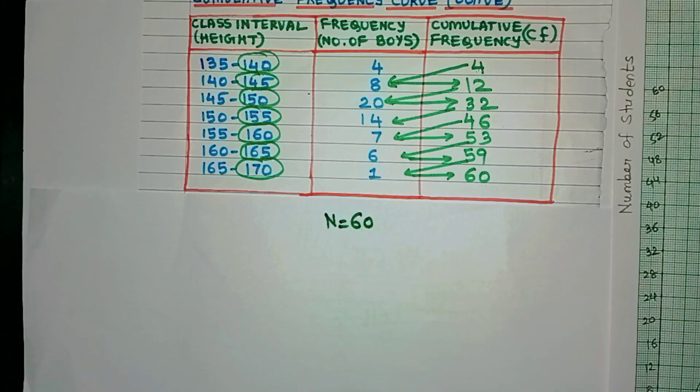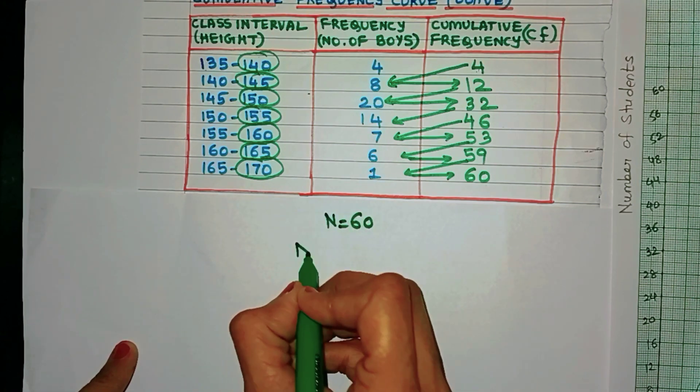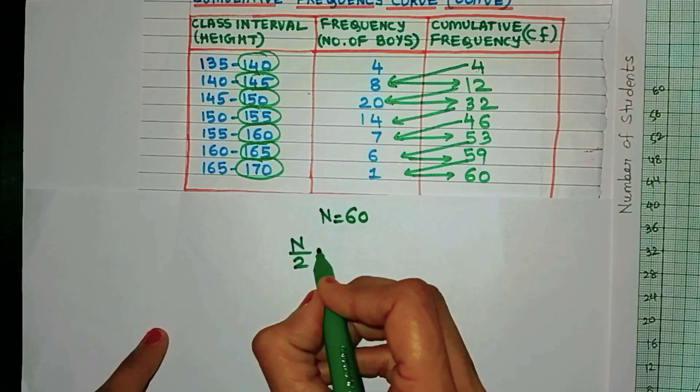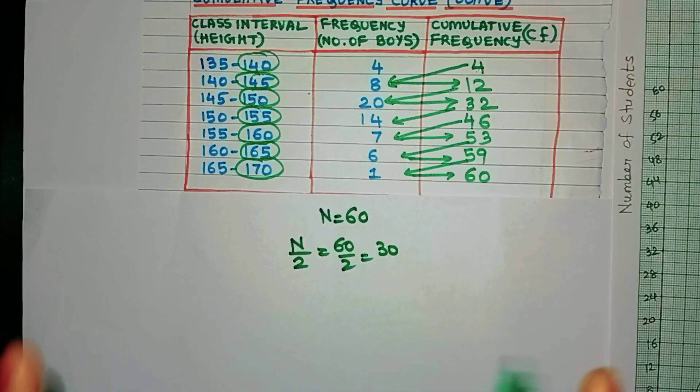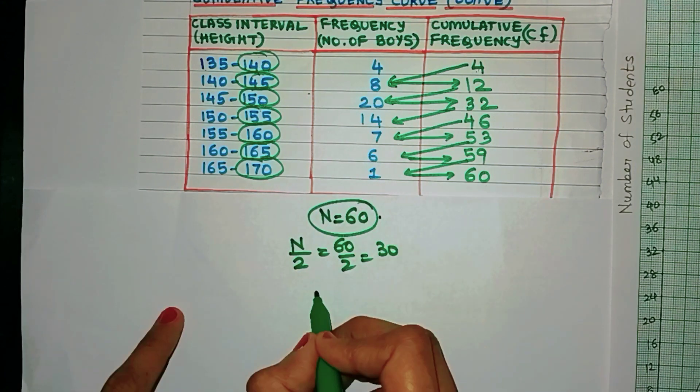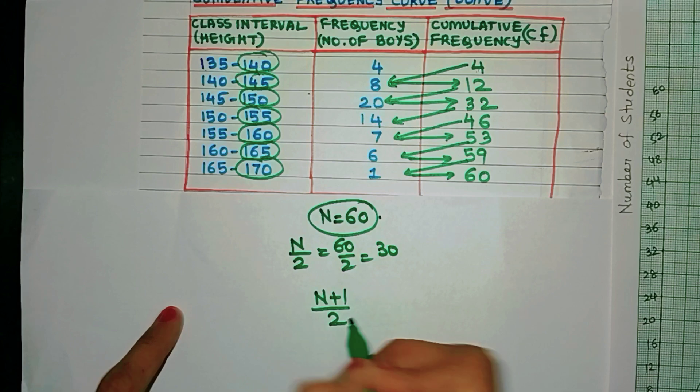It's very easy. All you have to do is find the total number of observations. Now that we have already found, that is 60. We know that median is always the middle most value. So how do we find the middle most value? Yes, n by 2, which is 60 by 2, that is 30.